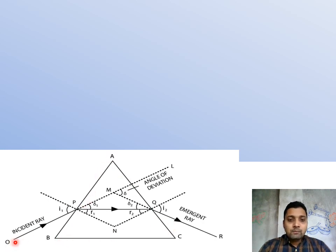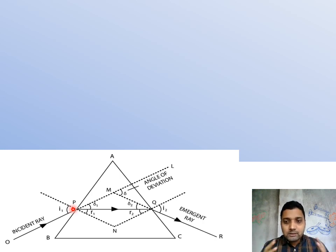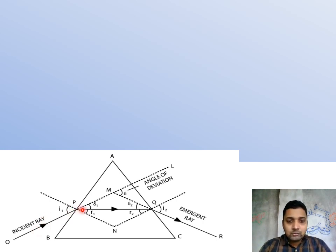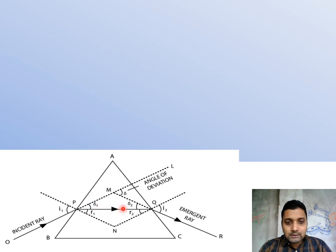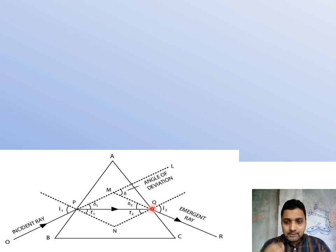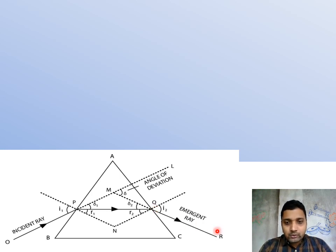Let's take a triangular face ABC as the face of the prism. The ray of light OP is incident on the first face AP. Light is going from air to glass — since the prism is made of glass — so going from rarer to denser medium, its speed decreases and it bends towards the normal PN. The refracted ray then travels inside the prism and hits the second face at point Q. There it goes from glass to air — denser to rarer medium — so it bends away from the normal, and the emergent ray QR goes away from the normal.